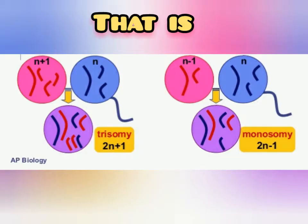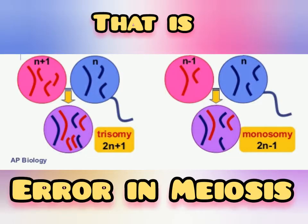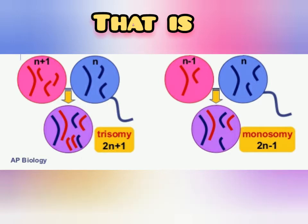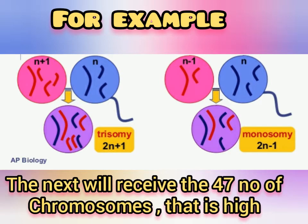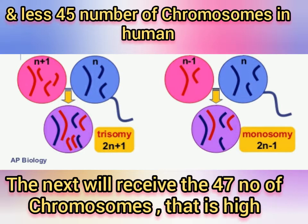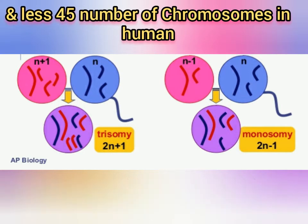For example, the next generation will receive 47 chromosomes — that is higher than normal — or 45 chromosomes, which is less than normal in humans. That's all about the errors in meiosis.